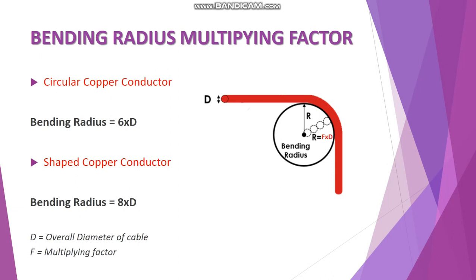When calculating bending radius, you need to first understand that there are two kinds of cable conductors available: one is a circular copper conductor, and the other is the shaped copper conductor. For a circular copper conductor, the bending radius is calculated with the formula R = F × D, where D is the overall diameter of the cable, and F is the multiplying factor. For circular copper conductor, F is 6; for shaped conductor, F is 8.